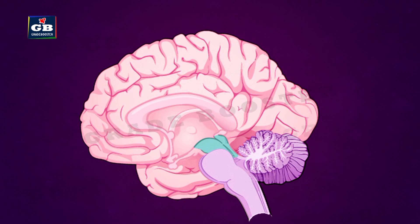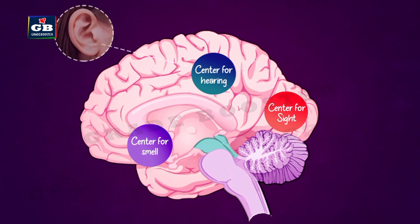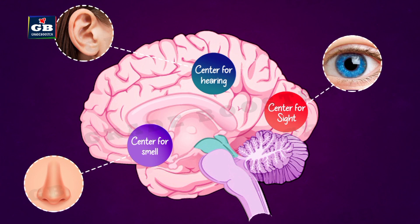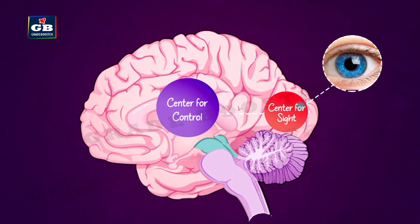The forebrain has regions which receive sensory impulses from various receptors, and it has different centers for hearing, smell, sight, and more. The information from different sense organs is analyzed and compared with information already stored in the brain. Based on this analysis, the forebrain takes a decision and sends it to the area of the brain which controls voluntary muscle movements.